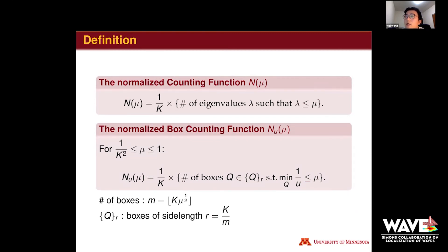For the normalized box counting function N_w(μ), we define some boxes. Box number is k times μ to the half, and takes the floor integers. Each box with side length r is k over m. So N_w(μ) counts the boxes where the minimum 1 over u is no more than μ, divided by the matrix size k.